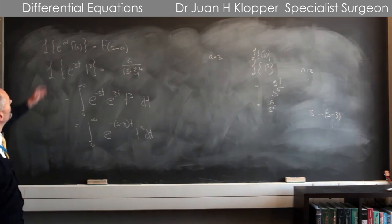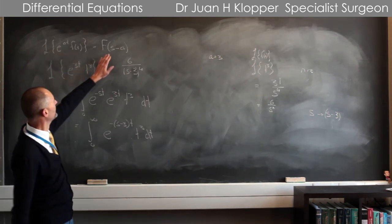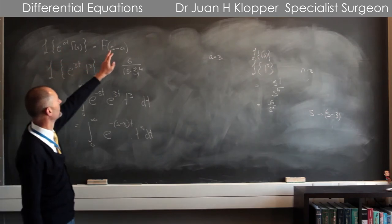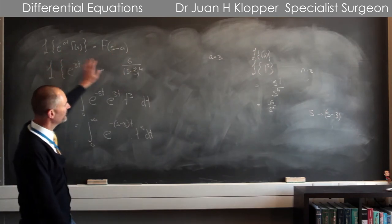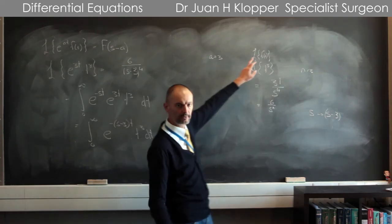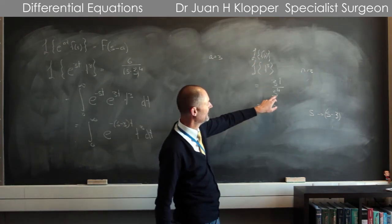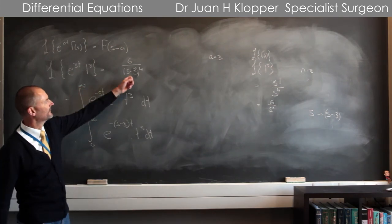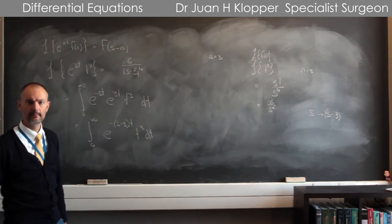Instead, I can just use this property. If I multiply f(t) by e to the power at, I can just do my normal Laplace transform of the f(t), and wherever I see an s, I just substitute it with s minus a, which here was s minus 3.